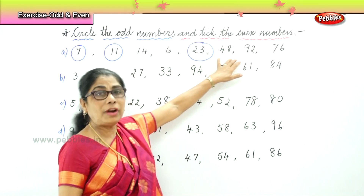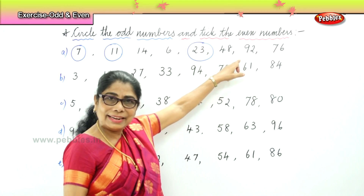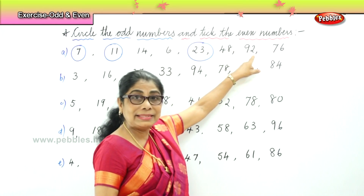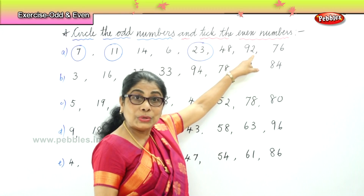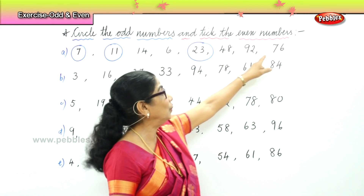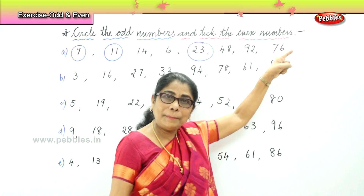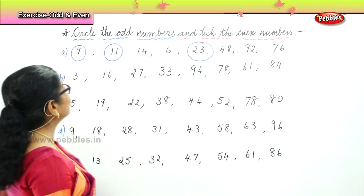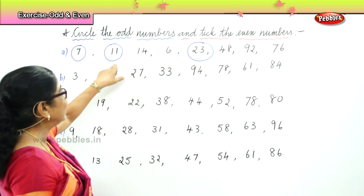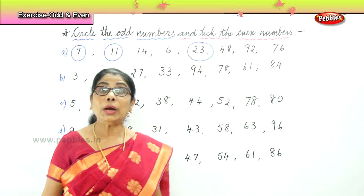Forty-eight — it ends in eight. Is it an odd number? No. Ninety-two ends in two — is it an odd number? No. Seventy-six ends in six — is it an odd number? No. Very good. So seven, eleven, and twenty-three — they are all odd numbers. The rest are all even numbers.